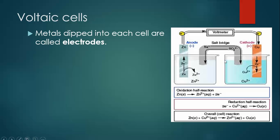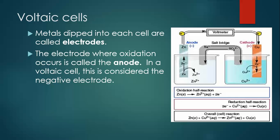Here's the diagram of a voltaic cell. It's the same reaction we looked at earlier — zinc reacting with copper ions — but instead of happening in one beaker, it's been split up into two different beakers. You dip those metals into each cell; those are called electrodes. The electrode where oxidation occurs is called the anode. In a voltaic cell, this is considered the negative electrode. In a voltaic cell, oxidation occurs at the anode, and here we have a piece of zinc metal that is the anode in this case.